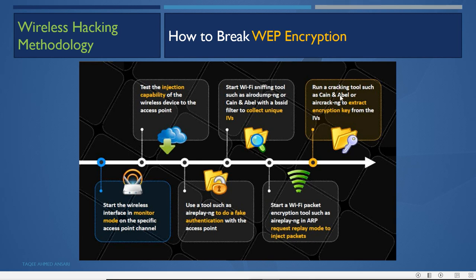Using aircrack-ng, the attacker extracts the password from the collected IVs. If more than 20,000 IVs are collected, WEP can be cracked within 10 seconds. WEP is very weak because the IVs are reused and are only 24 bits long, so they repeat very quickly. The attacker just needs to collect enough IVs and the password is easily cracked.